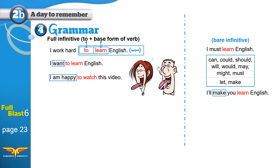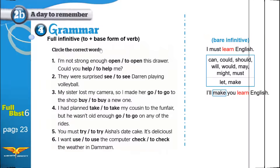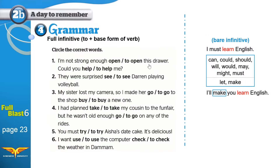Let's work on the exercise. Circle the correct word. Number one: 'I am not strong enough — open or to open this drawer?' No modal verbs, no let or make, so we choose 'to open.' We have an adjective and verb be, like 'I am strong to open.' Number two: 'Could you — help or to help me?' We have 'could,' so: 'Could you help me.' Number three: 'They were surprised — see or to see?' No modal verbs, so 'to see.' 'They were surprised to see Darren playing volleyball.'